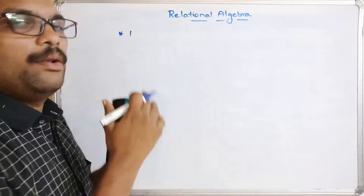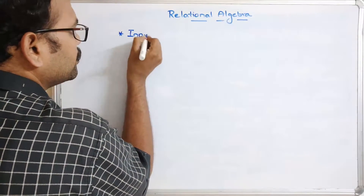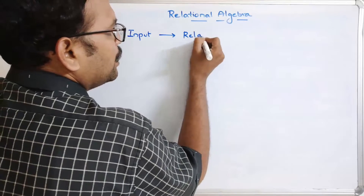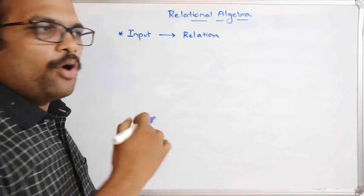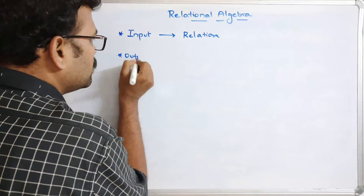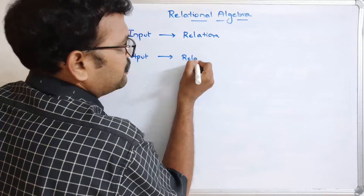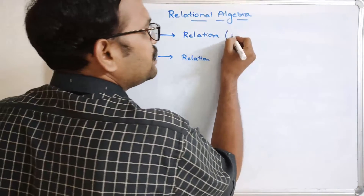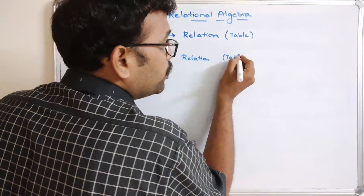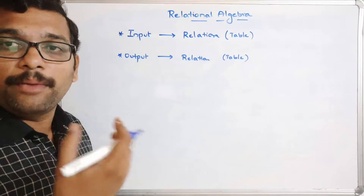There are different operations available in relational algebra. The input will be a relation, we apply some operators, and the output will also be a relation. Here, relation means a table — so both input and output are tables, and in between we apply the operations.